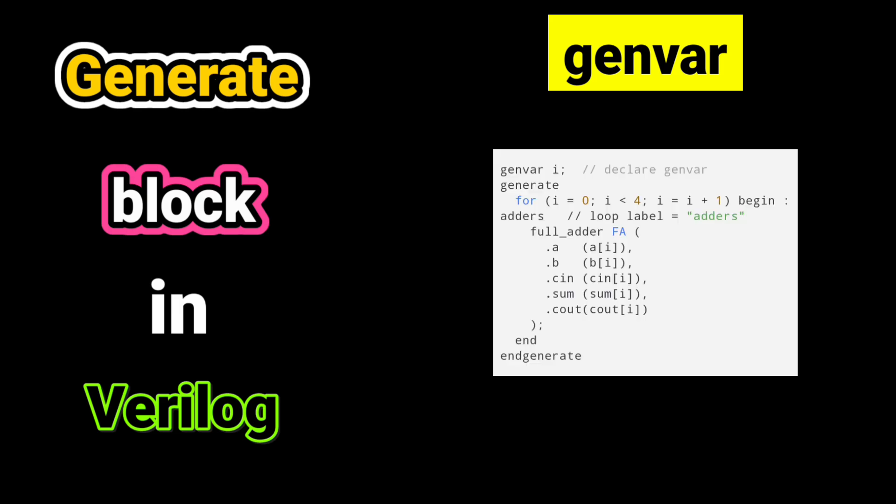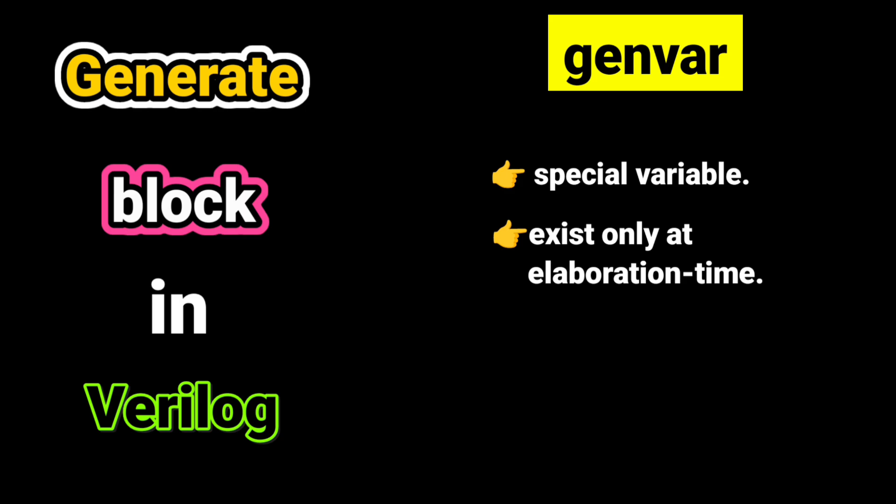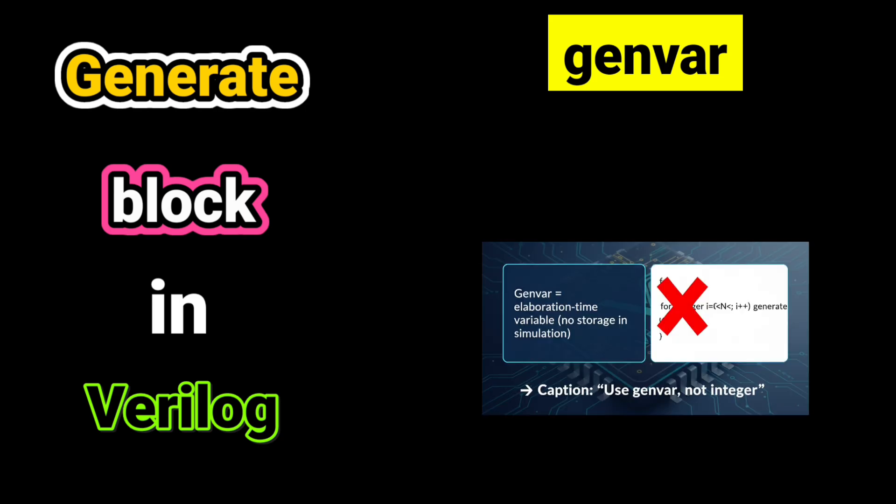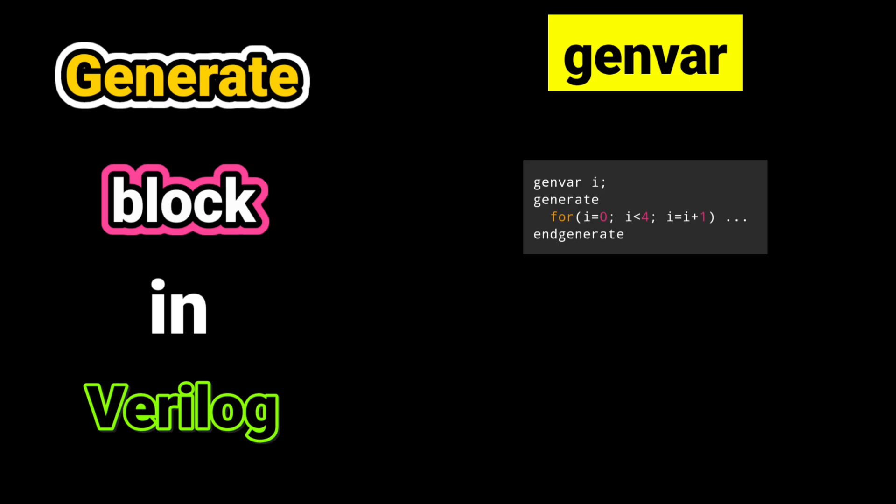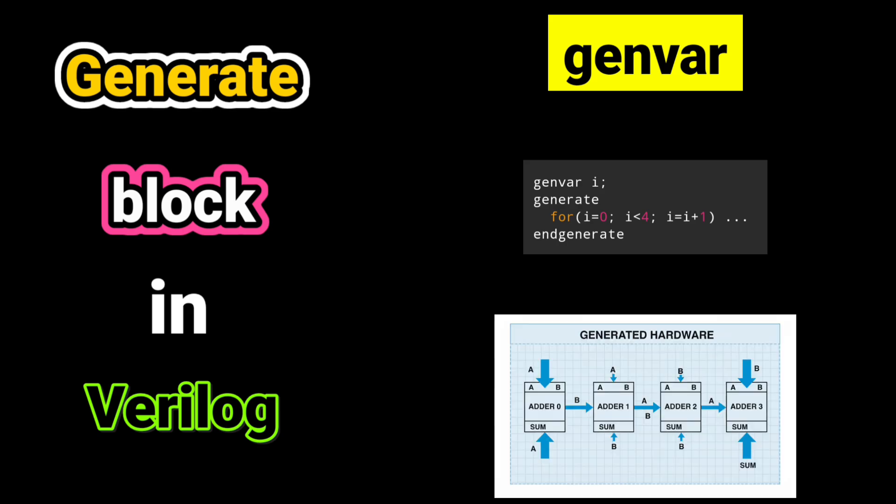What is GenVar? Inside a generate for loop, we use GenVar instead of an integer. Why? Because GenVar is a special variable that exists only at elaboration time. It does not take simulation storage. That's why you cannot use integer inside generate. This instantiates, or in an easy way, creates four full adders automatically. Without generate, you would have to write four instantiations manually, which is longer and error prone.